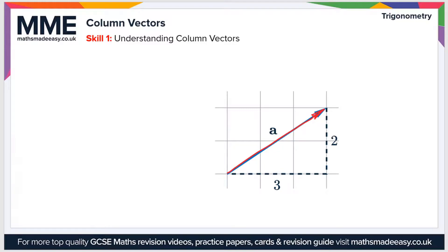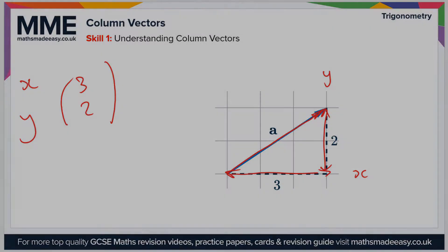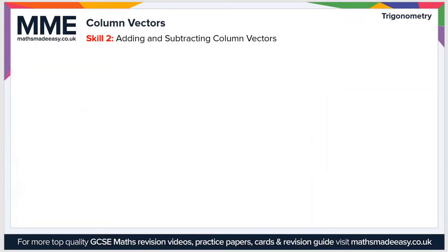Our column vector is essentially where we split the vector into its two components. So here you can see that the vector has a component of 3 in the x direction and 2 in the y direction. So in order to write this as a column vector, we would write this as 3, 2 — we put the x on the top and we put the y on the bottom. And that's about all there is to it.